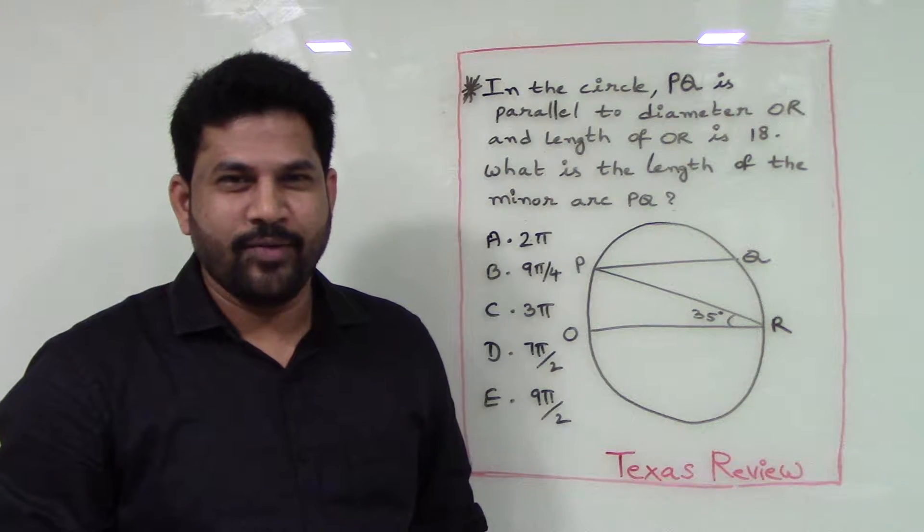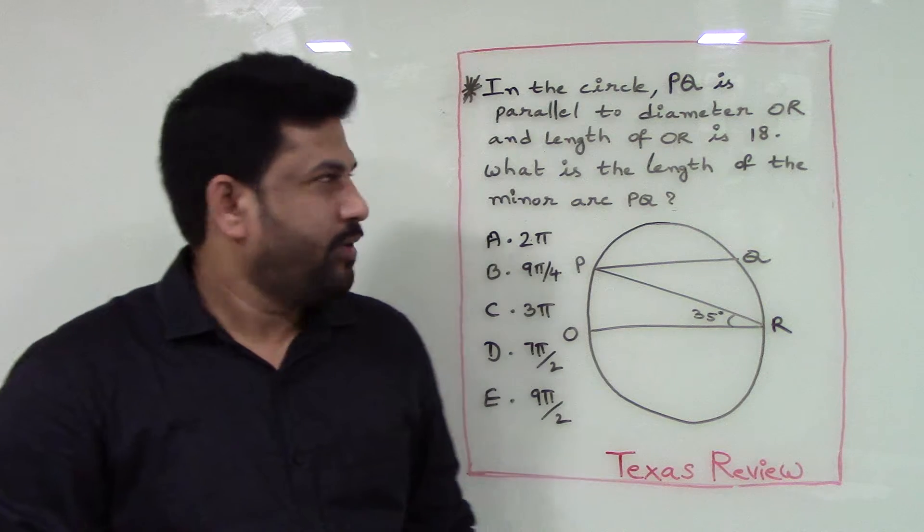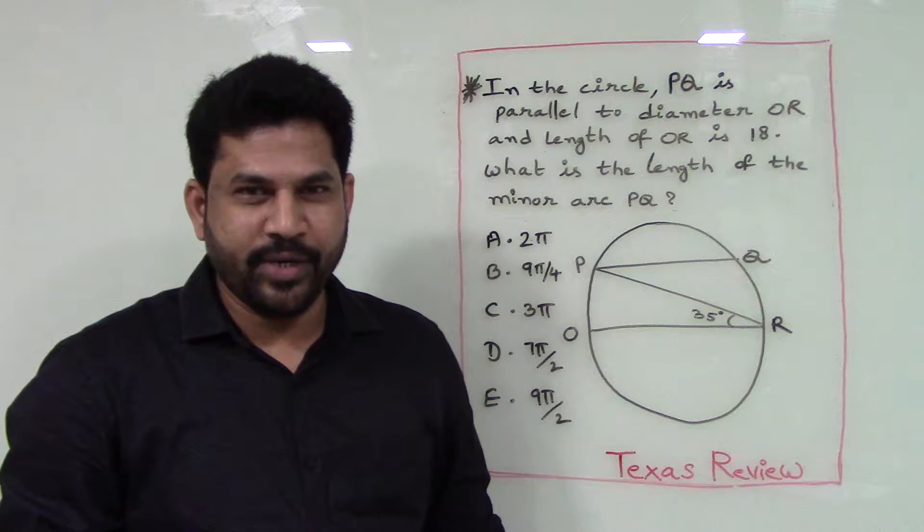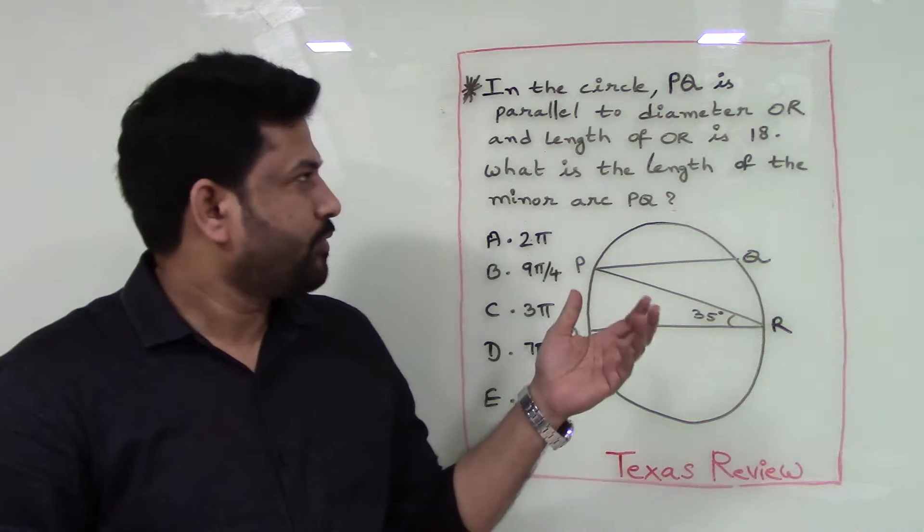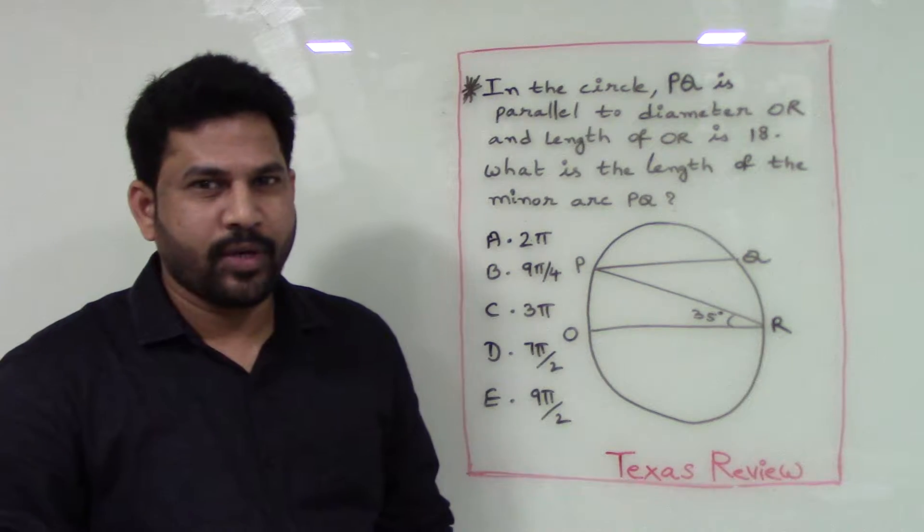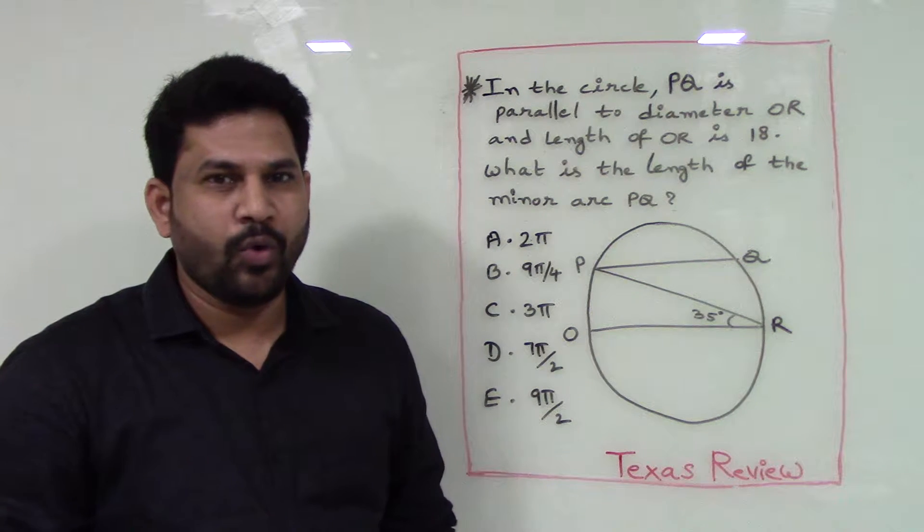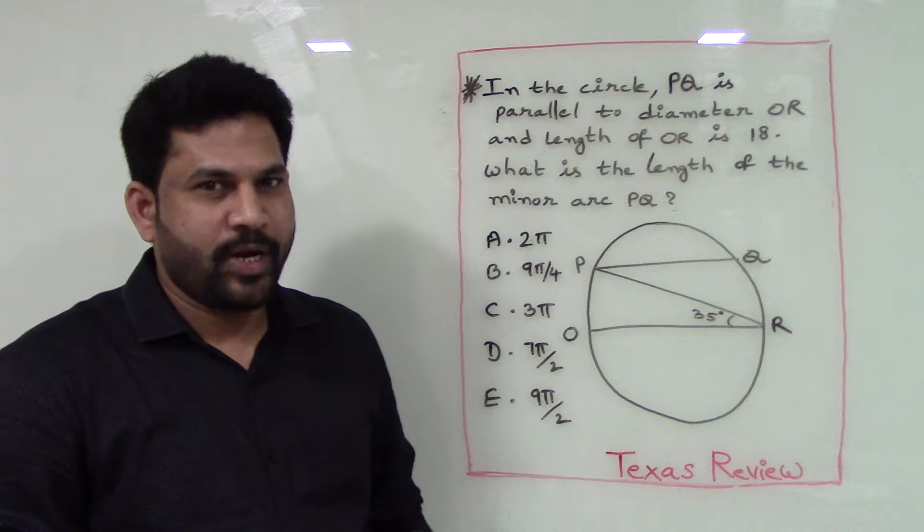Hello everyone, welcome to problem of the day from Texas Review. Today it's from geometry. In the circle, PQ is parallel to the diameter OR, and OR is 18 units.